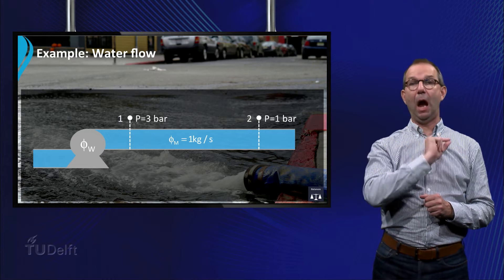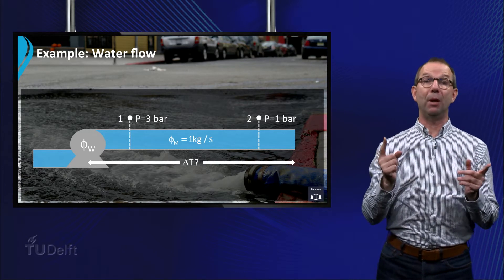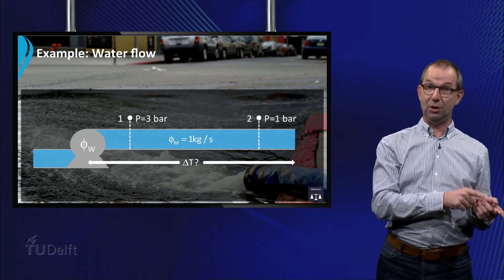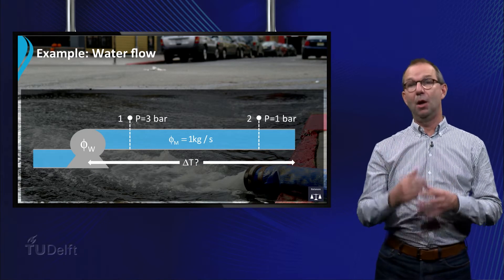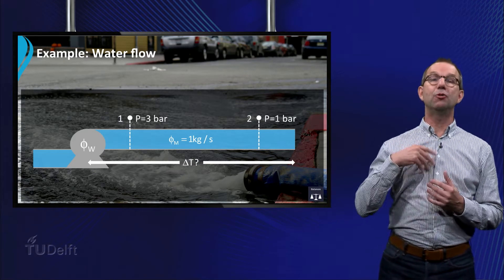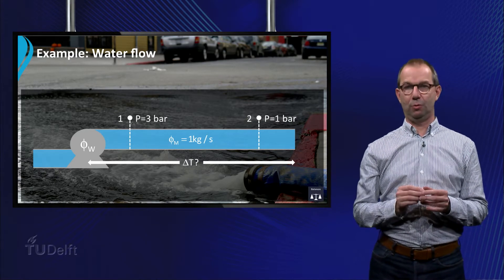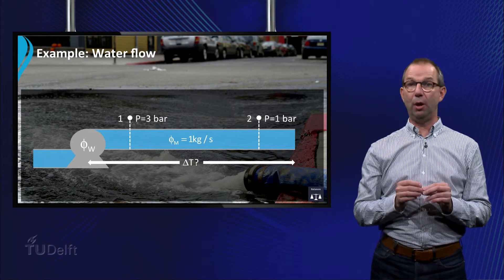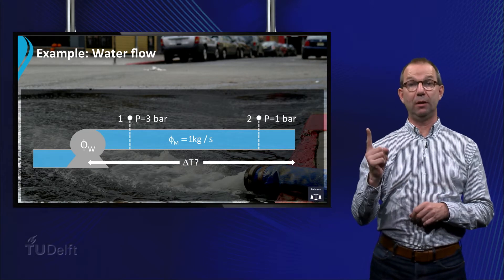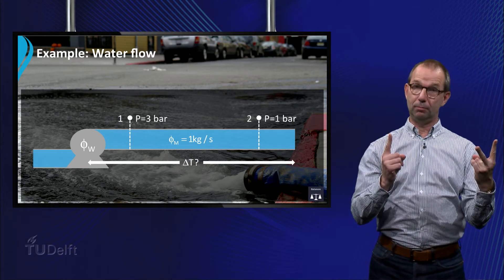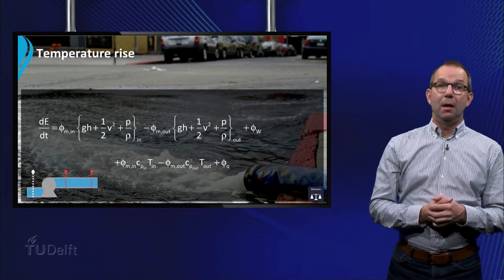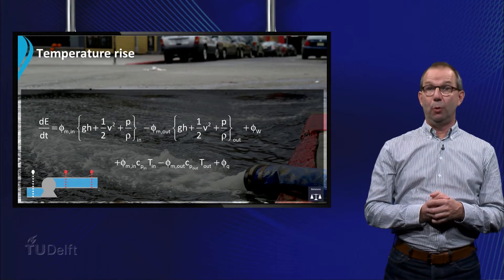First, how much is the liquid heated up by the frictional losses in the tube? And second, what is the power requirement of the pump driving this flow? To answer how much the temperature rises, we take the total energy balance between point 1 and 2. This gives the following equation.